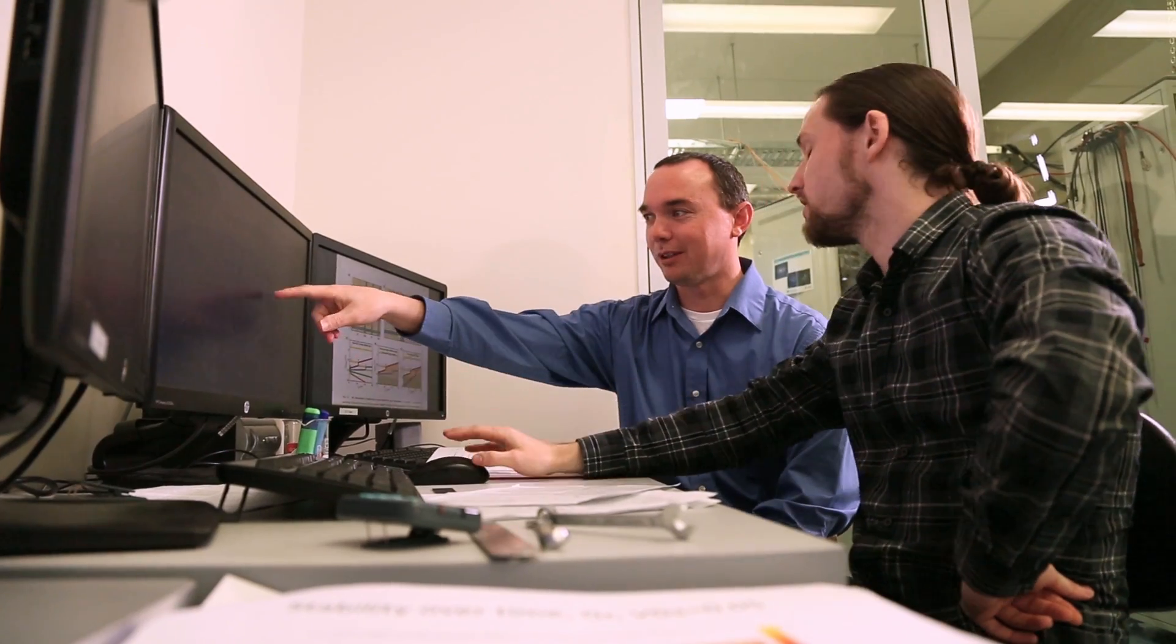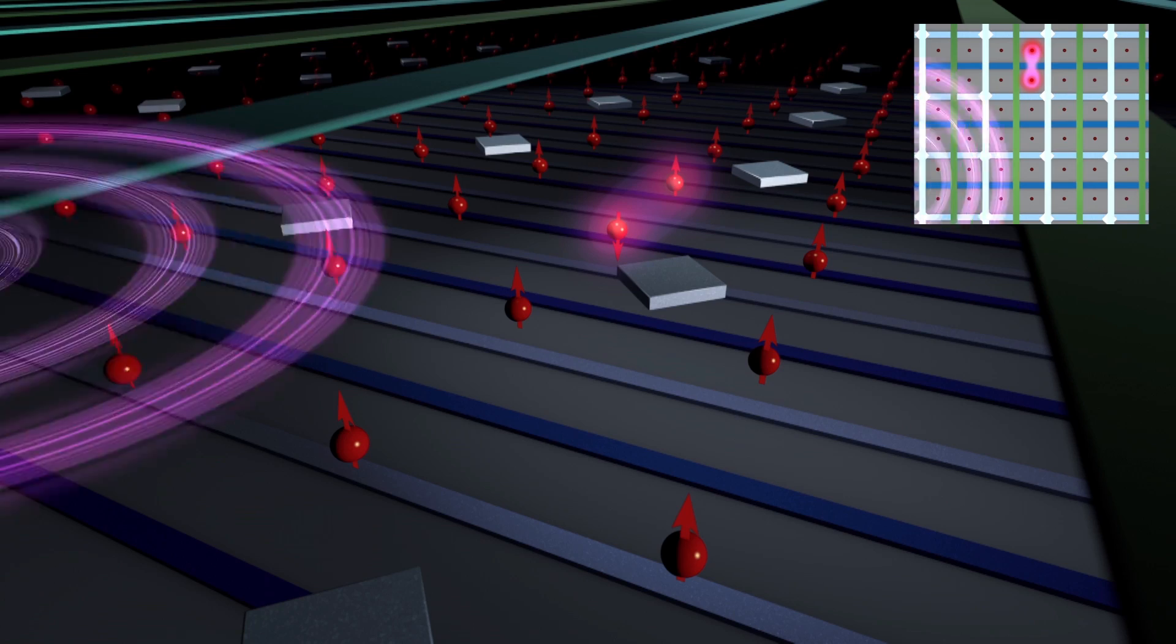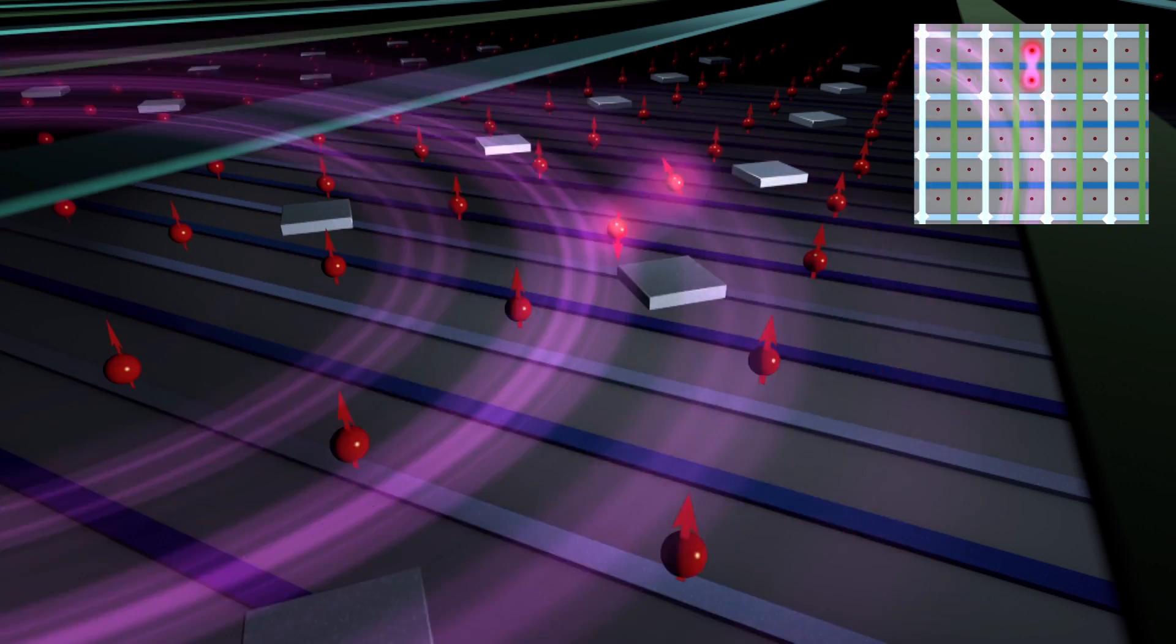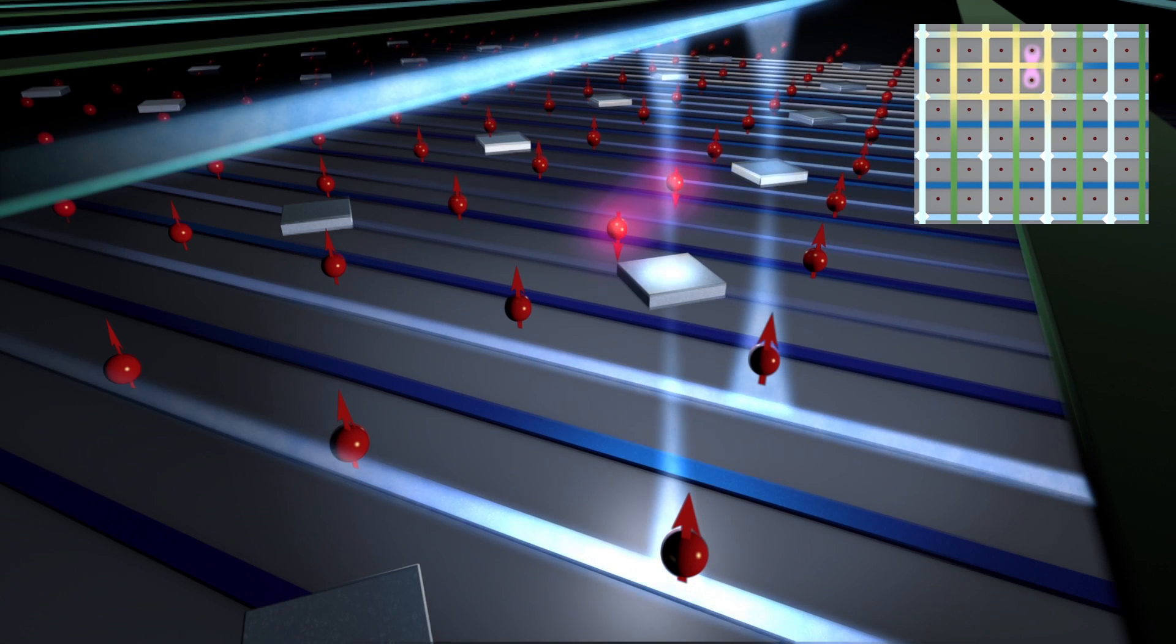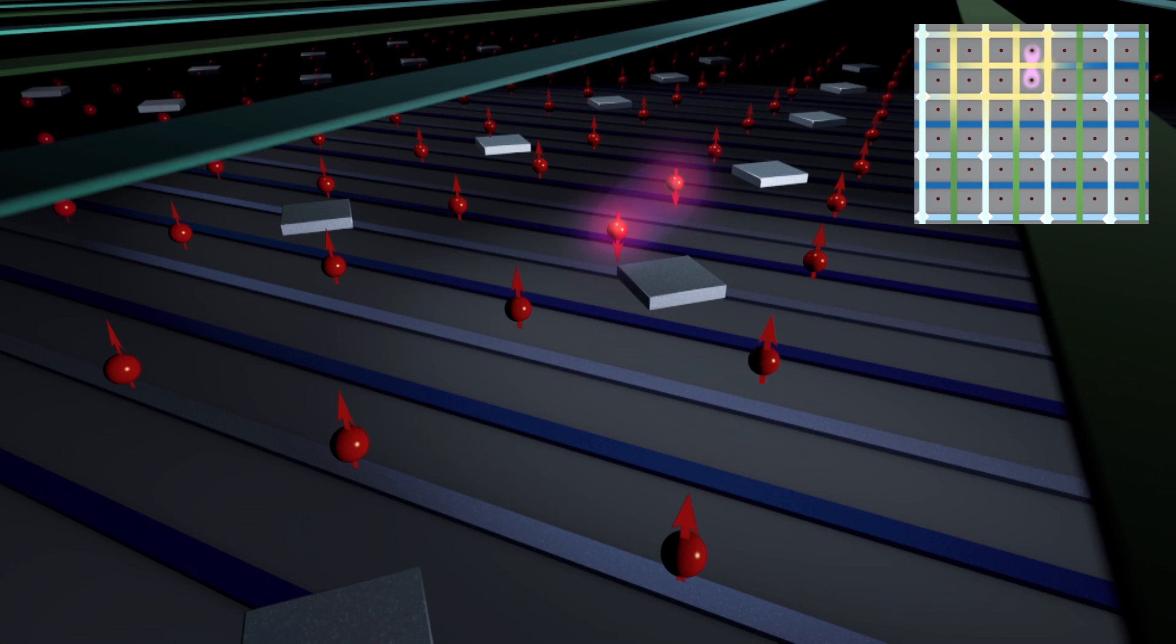Well there are a number of challenges when you start to think about how you're going to actually operate this surface code in a practical device. If you can measure each of the qubits in parallel then you can apply the surface code logic to it so if there are any errors in the operations you can measure them, detect them and then correct for them.